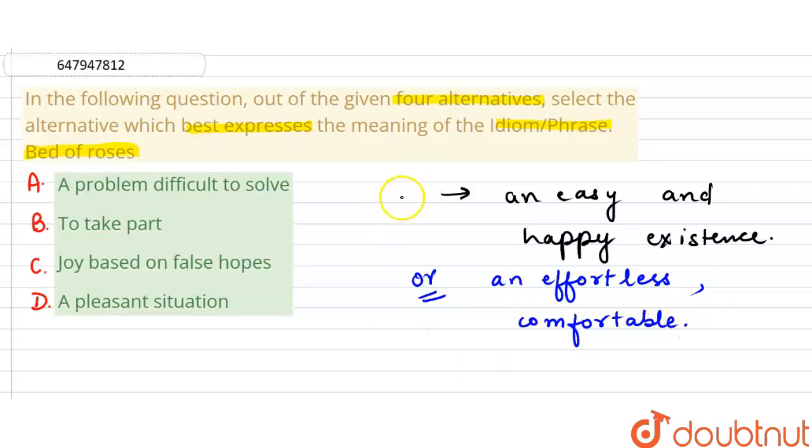The first one is a problem difficult to solve. A problem difficult to solve. So this will be wrong. To take part, this will be wrong.